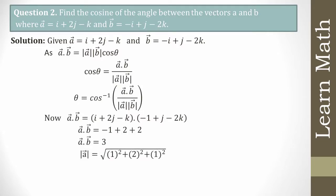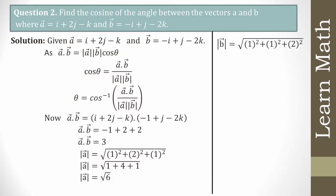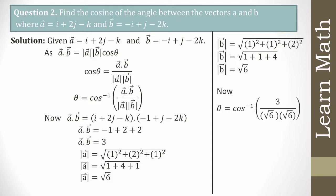Now find the magnitudes. |a| = √(1² + 2² + 1²) = √6, and |b| = √(1² + 1² + 2²) = √6. Substituting: θ = cos⁻¹(3 / (√6 × √6)) = cos⁻¹(3/6) = cos⁻¹(1/2).